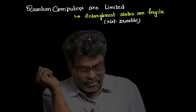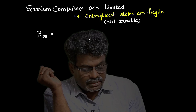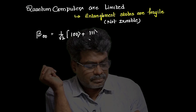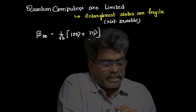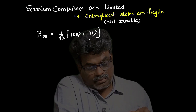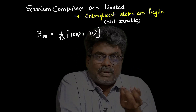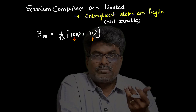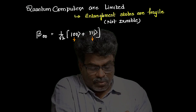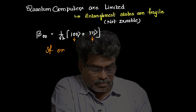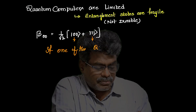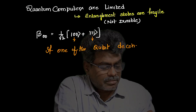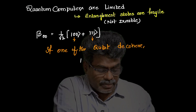For example, if I take one entanglement state, I can take this as 1/√2 (|00⟩ + |11⟩). This is the entanglement state. If one of the qubits interacts with the environment and decoheres, then the entanglement state will be lost.